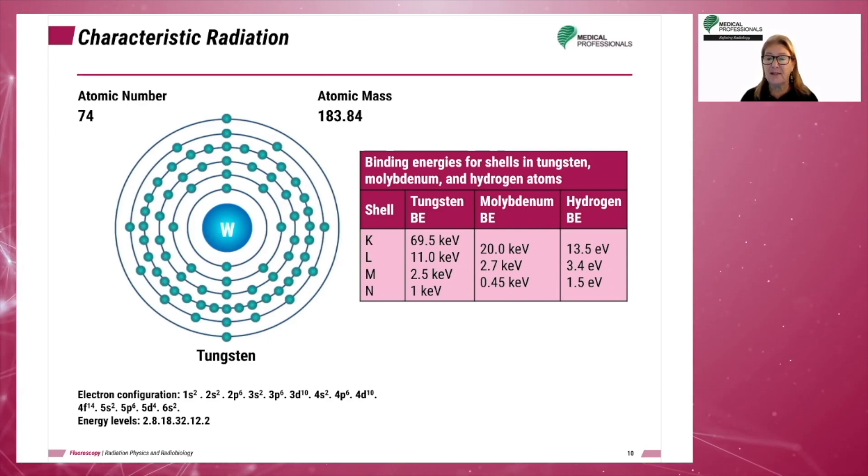In this case, 90 keV, which is the incoming electron, minus 11 keV, which is the binding energy of the L-shell electron, is 79 keV. Of course, this is only one out of thousands of produced X-ray photons.